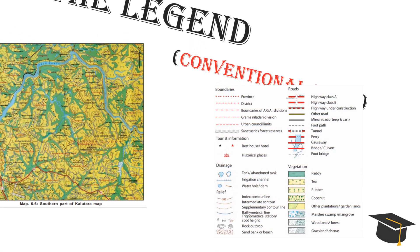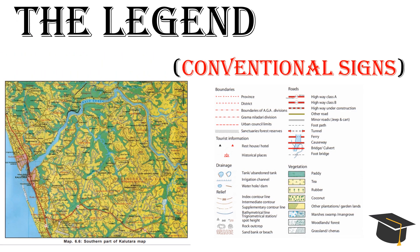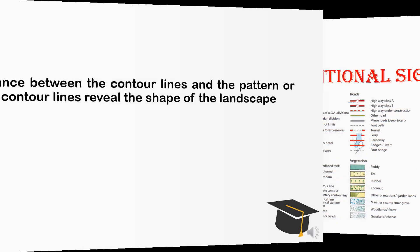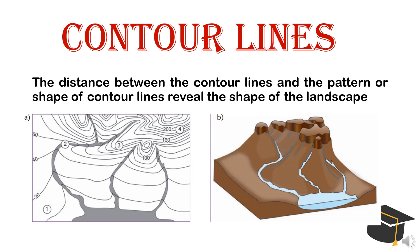The next important element is the legend. When considering the metric map, they have unique conventional signs. Legend is the source to describe the map. Basically, the contour lines are used to represent relief features. The distance between the contour lines and the pattern or shape of the contour line reveals the shape of the landscape.